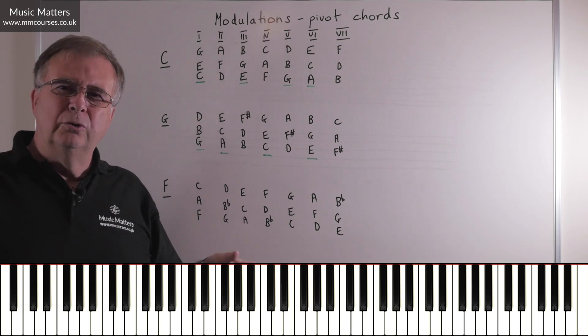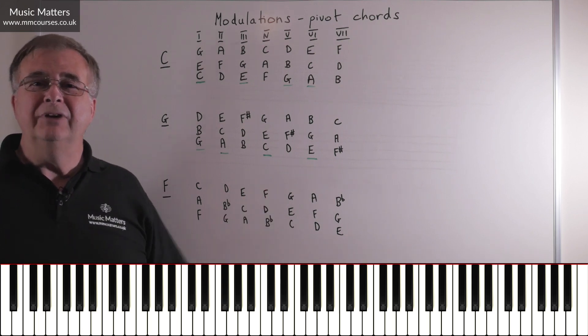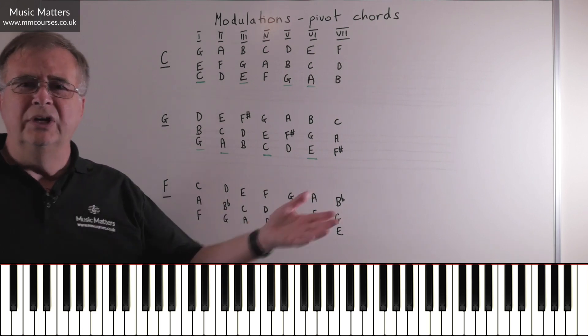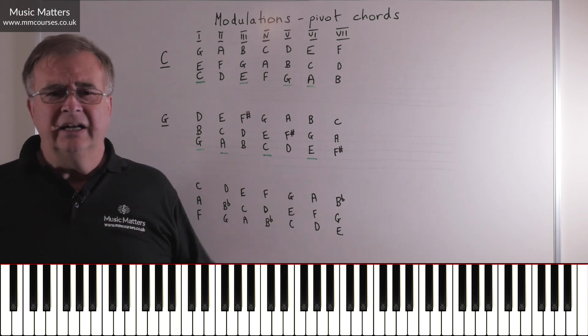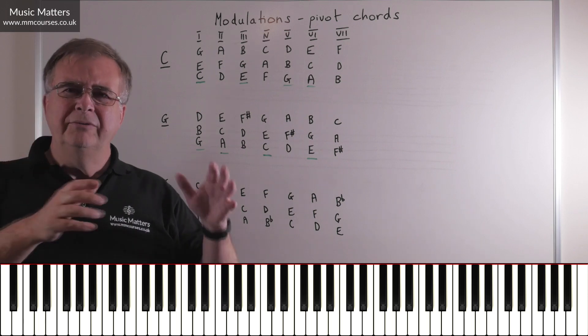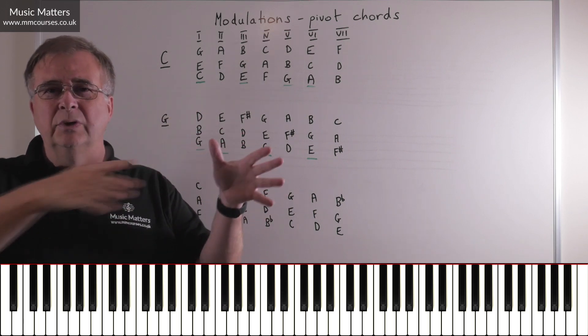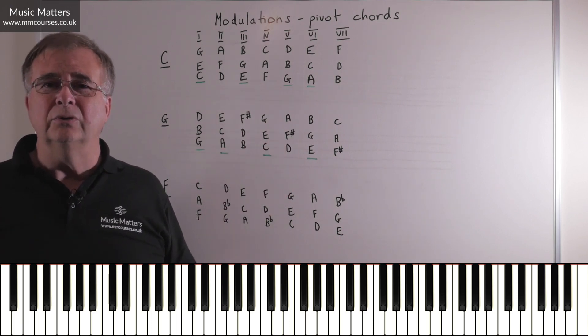Now of course if you went further away, the further away you go, the fewer the pivot chords are likely to be. You may even get to a point where you think, well I'm trying to go from C major to F sharp major, and I can't find any pivot chords. Well that's not a great surprise, because you're moving from a key with no sharps to a key with VI out of VII note sharps.